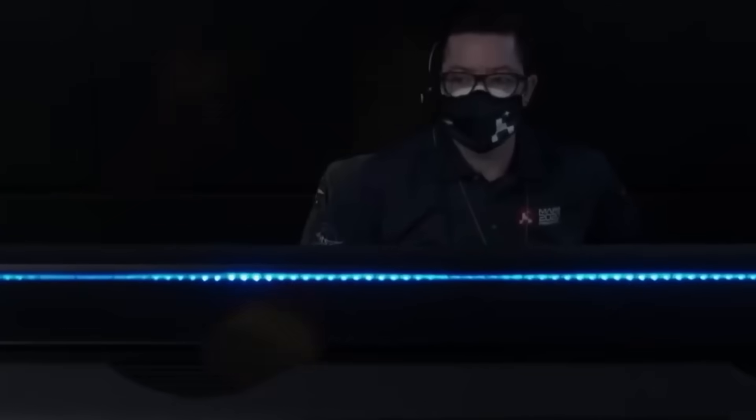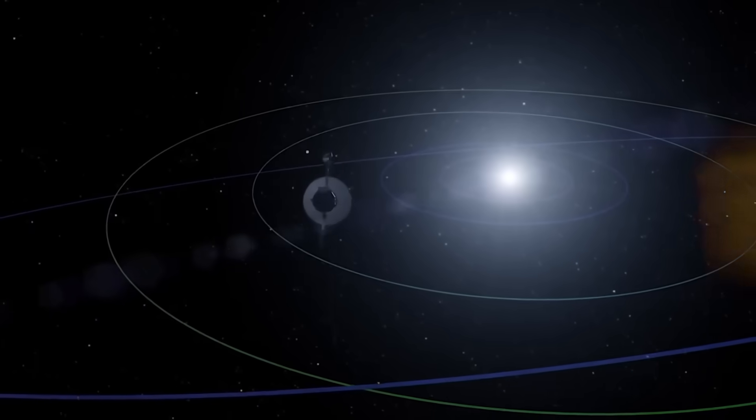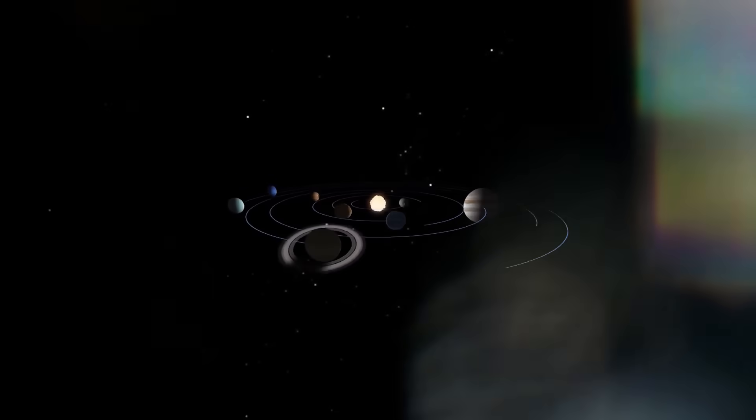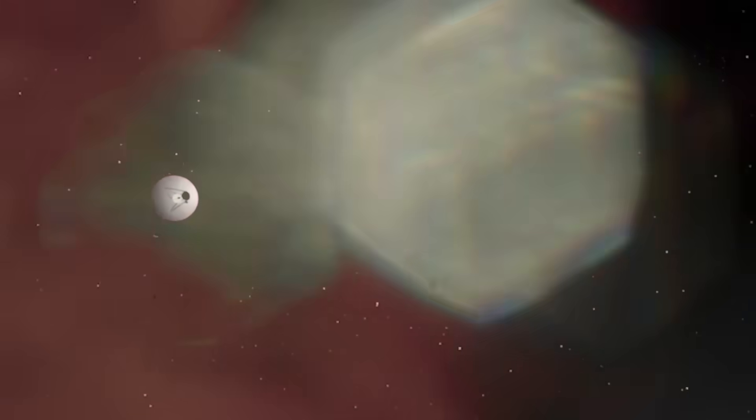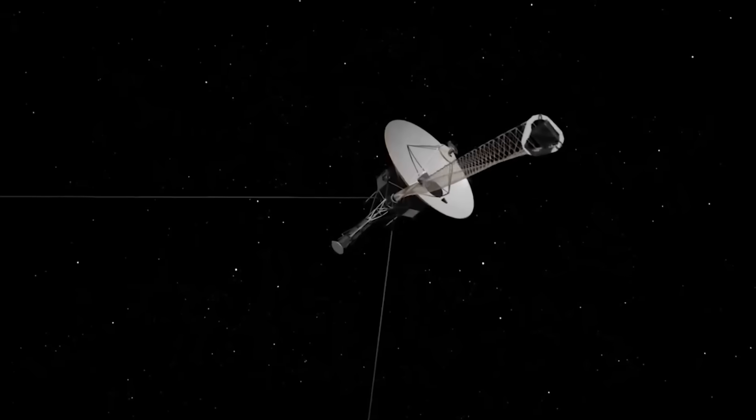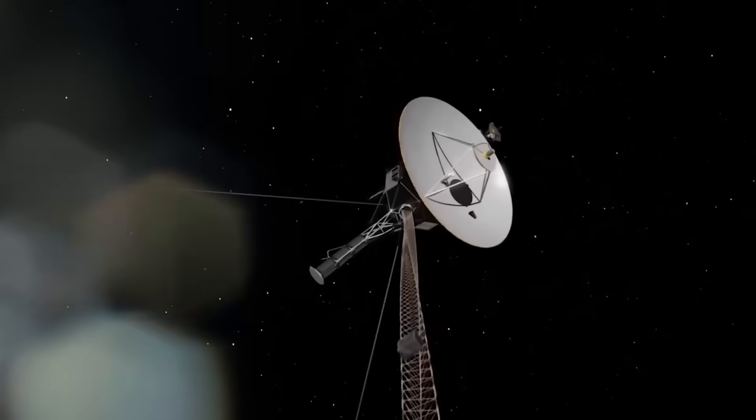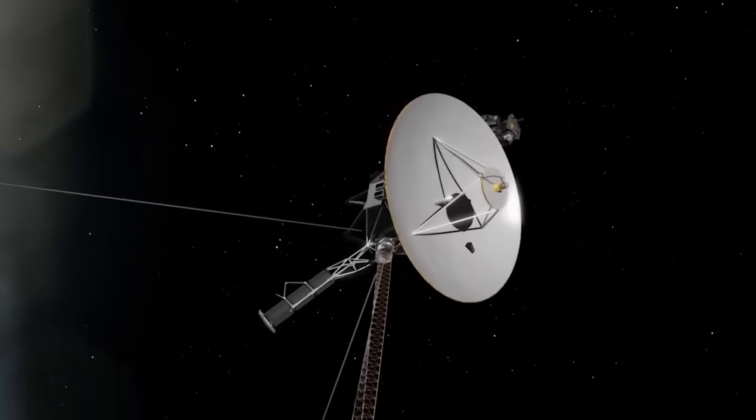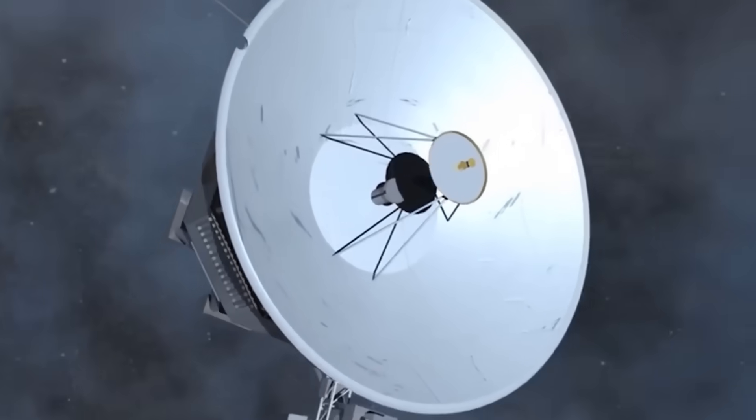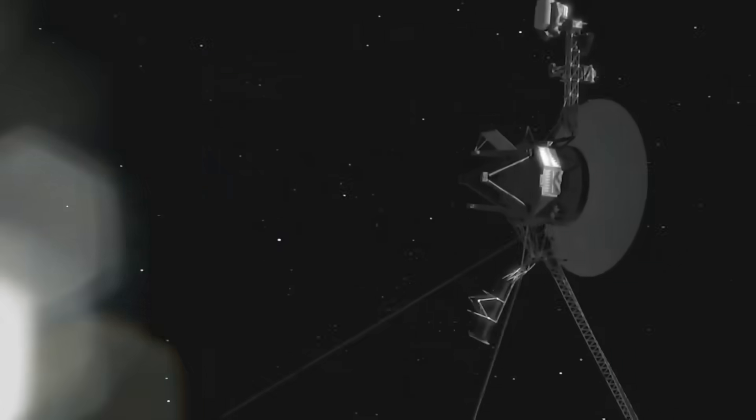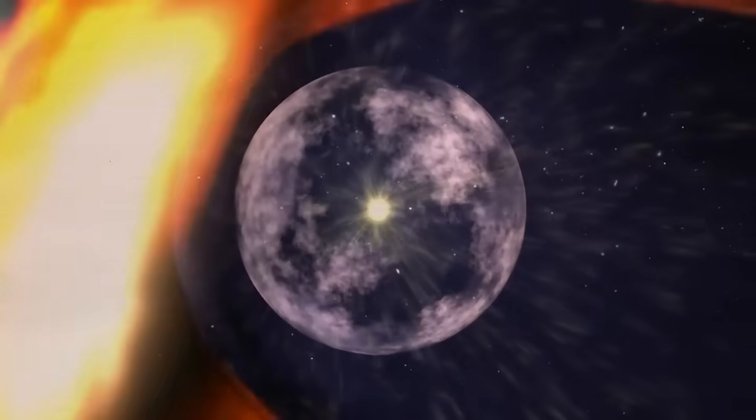Over the decades, it continued its silent voyage, moving a million miles a day into the cosmic dark. It transmitted data from regions no human creation had ever reached: the edge of the heliosphere, the termination shock, and finally in 2012, the threshold into interstellar space itself. But out there, beyond the sun's protective bubble, the environment was far from empty. Voyager recorded denser plasma, unchanging magnetic fields, and strange oscillations that scientists could barely explain. The deeper it went, the stranger the data became. And then, something changed.